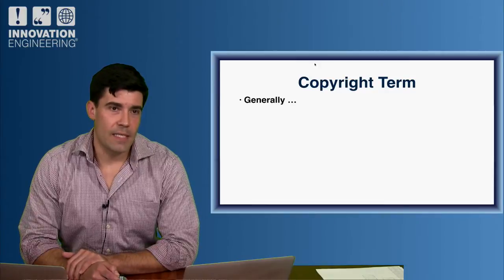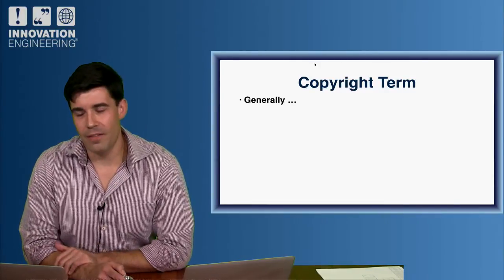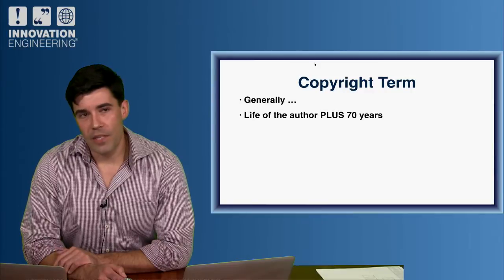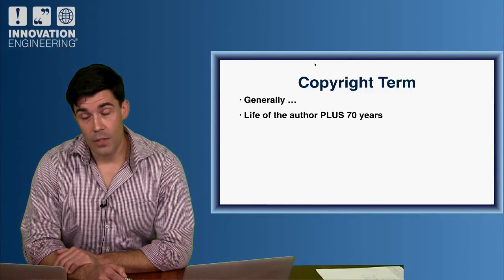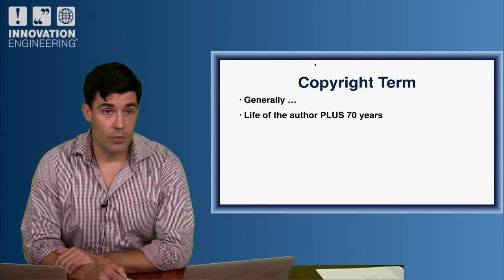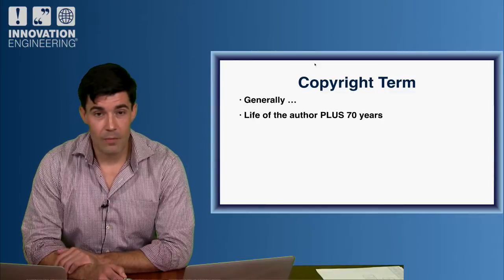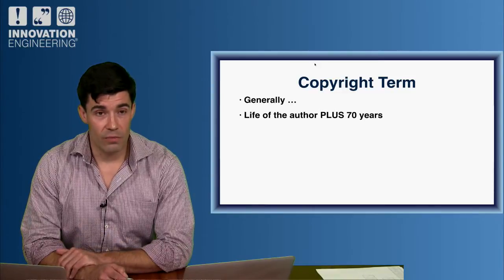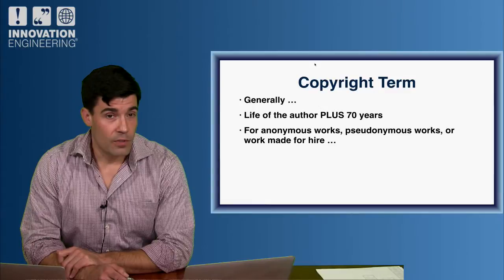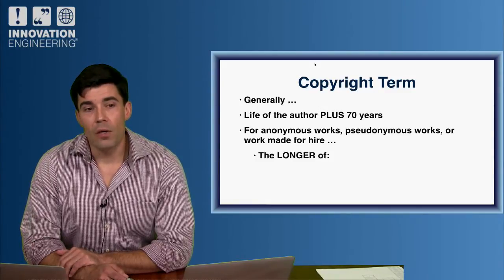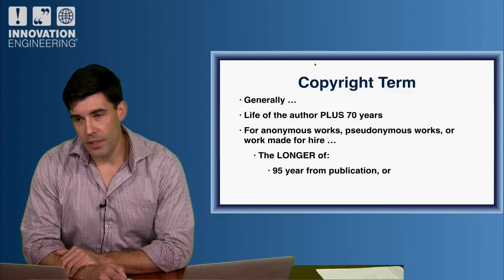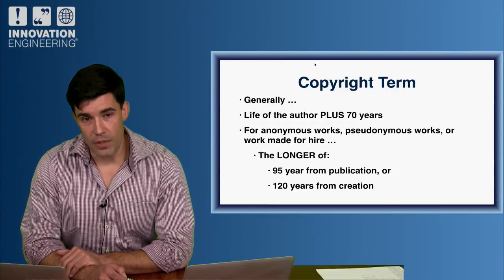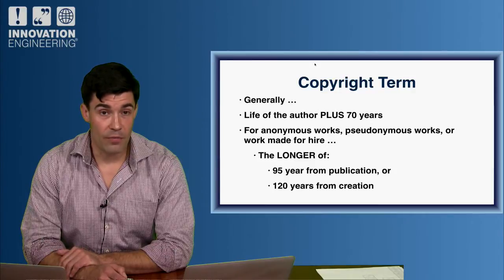How long does a copyright actually last? Generally speaking — and these are safe numbers to go by — consider that protection lasts for the life of the author plus another 70 years. So if you file for copyright protection, it's something you'd want to put in a will, because your family might be able to make money off it. This is the reason that a lot of Disney works are still protected. For anonymous works, pseudonyms, or work made for hire, you get the longer of 95 years from publication or 120 years from creation. You want to keep track of when something is created and when it's published because the copyright office will ask these things.